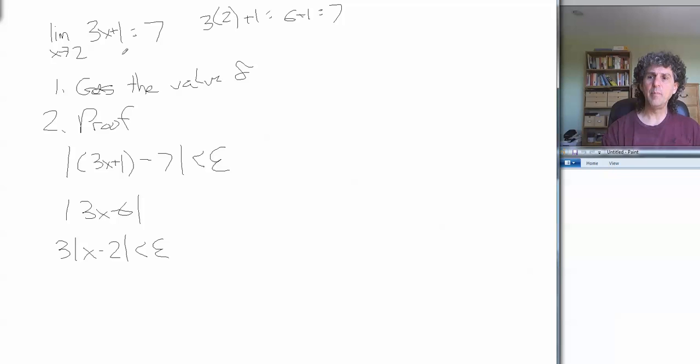And remember the other part of our epsilon-delta definition, that 0 has to be less than the absolute value of x minus our limiting value there. So that's x minus 2, which has to be less than or equal to delta. Looky, looky. x minus 2 is showing up here and here. And that's no coincidence. So 3 times the absolute value of x minus 2 is always going to be less than delta. x minus 2, therefore, must always be less than epsilon over 3.